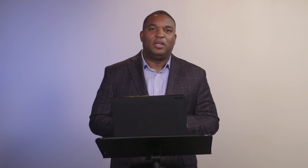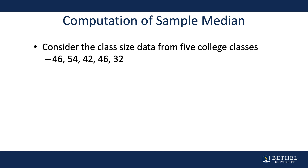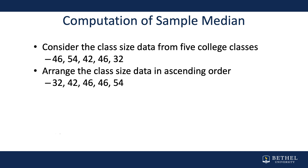Here's an example: consider class size data for a sample of five college classes — 46, 54, 42, 46, and 32. To find the median, arrange those numbers in order: 32, 42, 46, 46, 54 — then pick the one in the middle. It's easy to do when you have an odd number of observations. The middlemost data value is 46, so that is the median.